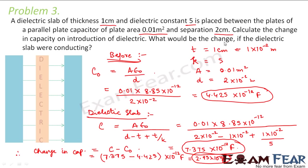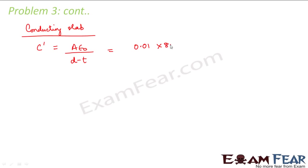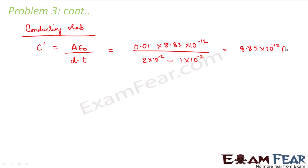The second half of the question asks what would be the change if the dielectric slab were conducting instead. We have already calculated the capacitance before any slab is introduced as 4.425×10⁻¹². If a conducting slab of the same thickness is introduced, the capacitance would be A·ε₀ / (D − T). So A = 0.01, ε₀ = 8.85×10⁻¹², D = 2×10⁻², T = 1×10⁻². This value comes out to be 8.85×10⁻¹² farads.